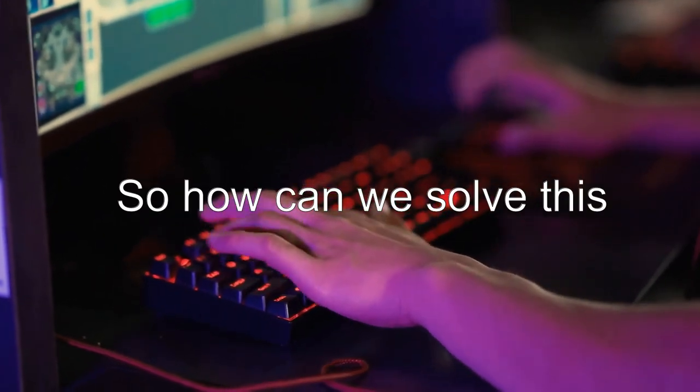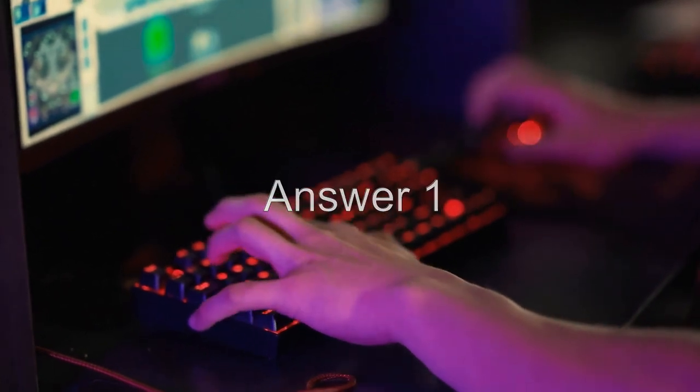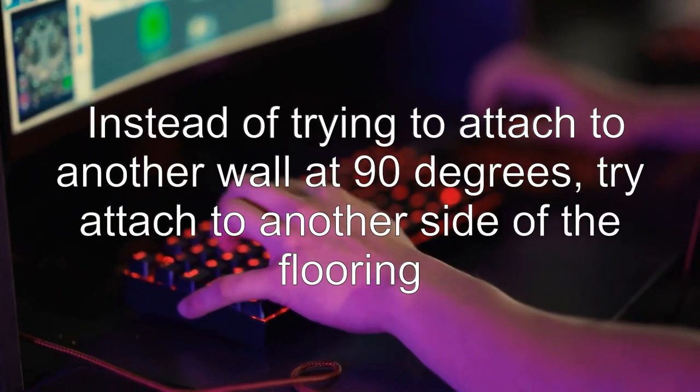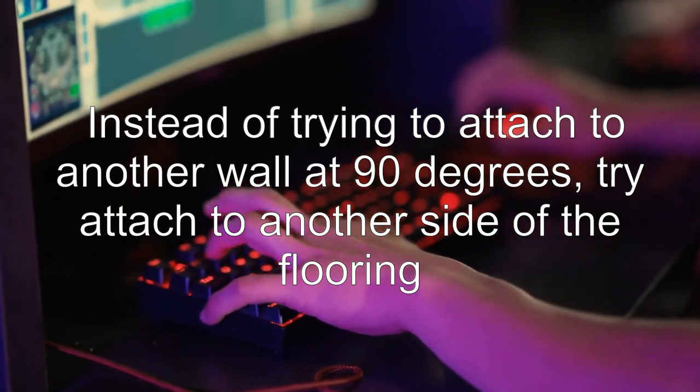So how can we solve this? There's one possible answer. Instead of trying to attach to another wall at 90 degrees, try attaching to another side of the flooring.